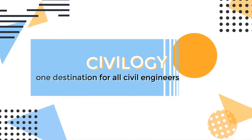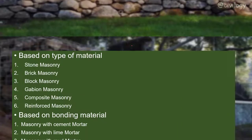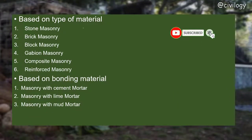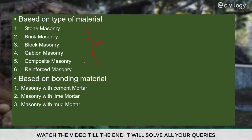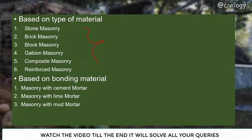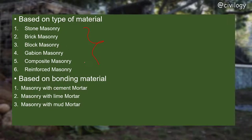Based on material types we have stone masonry, brick masonry, block masonry, gabion masonry, composite masonry, and reinforced masonry. Based on bonding materials we have cement mortar masonry, lime mortar masonry, and mud mortar masonry. We'll give a quick introduction about all of these in this short video.